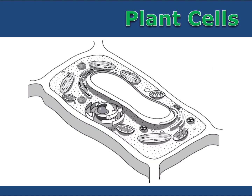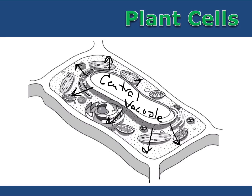Plant cells also have a very large central vacuole in the middle of the cell. This central vacuole is full of water and minerals and it helps to push the plant cell out into the cell wall. This helps the plant maintain its turgor pressure and keeps plant cells stiff and rigid.